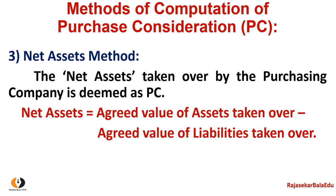The third method is the net asset method. The net assets taken over by the purchasing company are calculated. Assets are taken over at agreed values. For example, if land and building has a balance sheet value of 5 lakhs but an agreed value of 6 lakhs, or if it is 2 lakhs against 1 lakh 50 thousand, the revised agreed value is compared to the balance sheet book value.